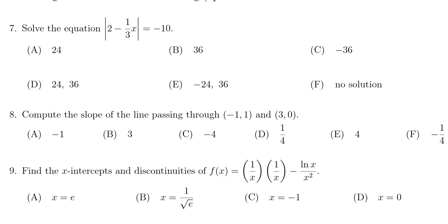Now the first thing to notice here is that we have the absolute value of an expression equal to negative 10. Absolute value is always non-negative; it can never equal a negative, so there's no choice of x that'll make the absolute value equal to negative 10. So in fact this equation has no solution. The correct answer would be F.